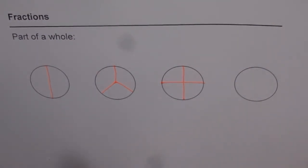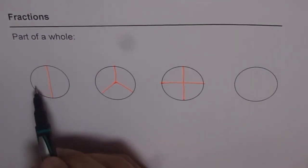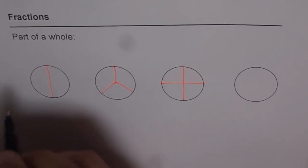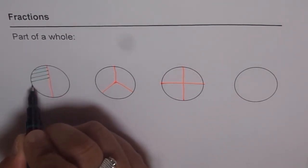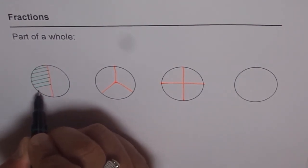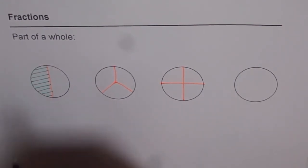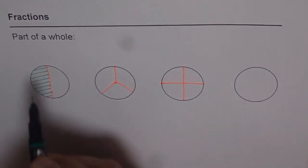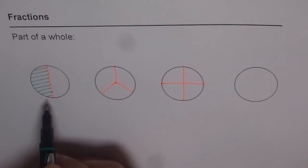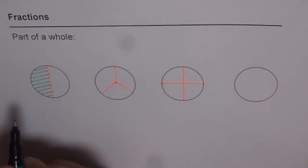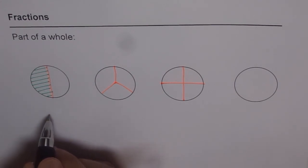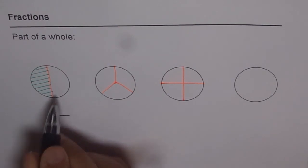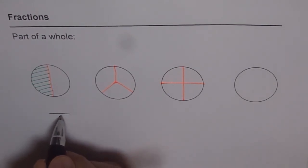Now we will try to understand what these parts are. For the very first circle, we can shade one part in a color — let's say shading green here. What fraction is green? That is what we want to understand. We have one full circle, which is one whole, divided into two parts. When we divide something into two equal parts and we write the number of parts in the denominator, or below the line, which is two.